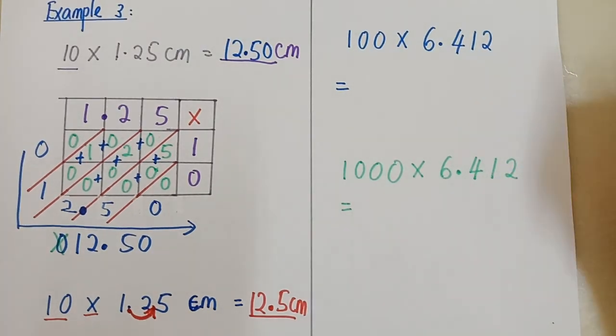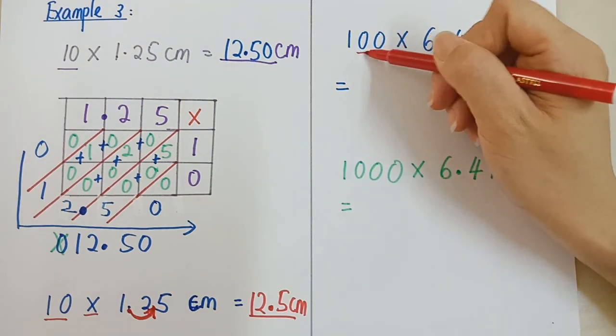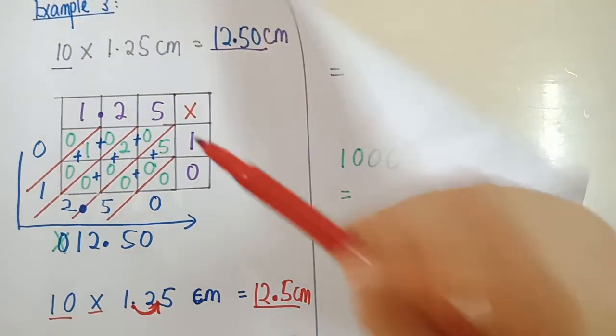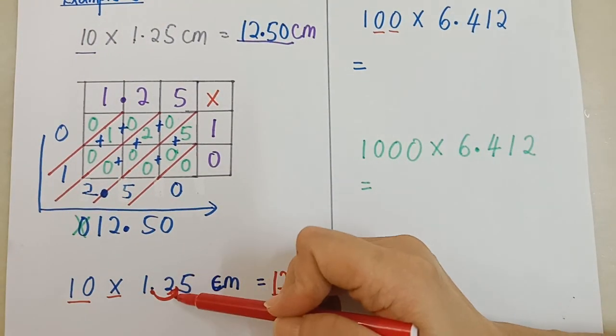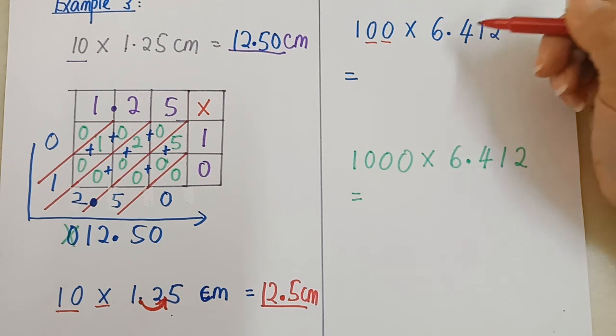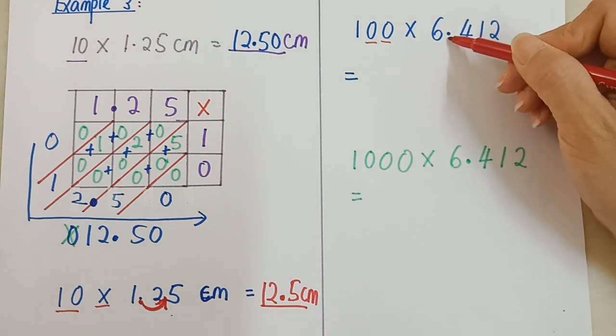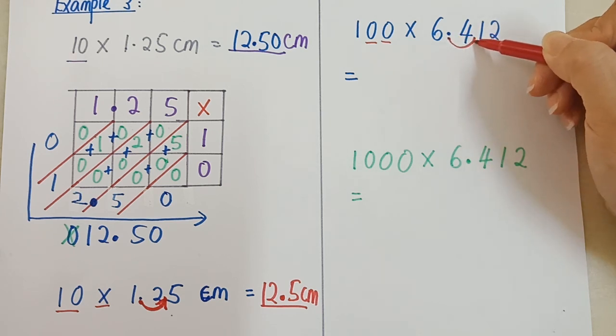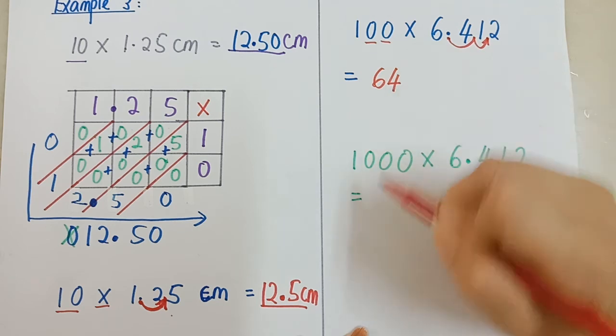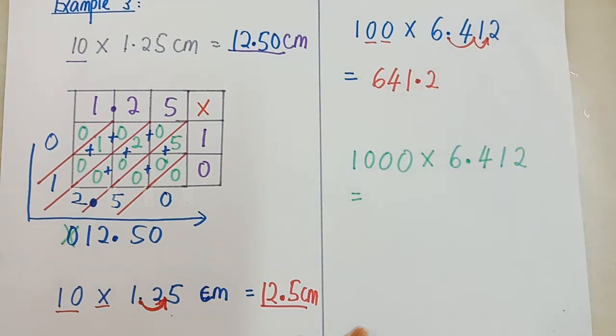Tengok contoh ini pula. Ini Madam tak nak guna pengiraan yang bentuk lazim ke ataupun latis. Madam nak buat secara cepat. Dengan cara yang cepat. Gerak titik. Move decimal point. Ni, 100. Ada 2 sifar kan? So kita kena bergerak ke kanan 2 langkah. Tadi darab 10 bergerak 1 langkah. Sekarang darab 100 bergerak 2 langkah. Letak pen kamu di tempat titik perpuluhan. Letak dekat point. Gerak 2 ke kanan. 1, 2. So point sudah berubah ke sini. Jawapannya 641 point 2. Nampak? Lebih laju kan? Lebih cepat kan?